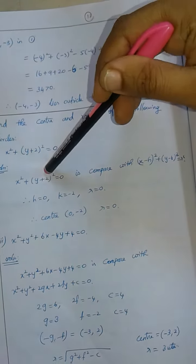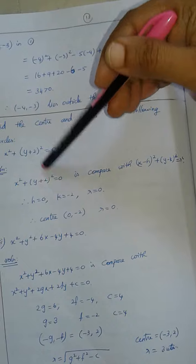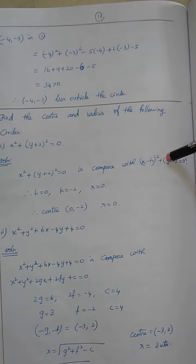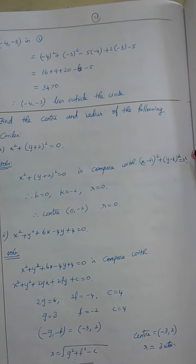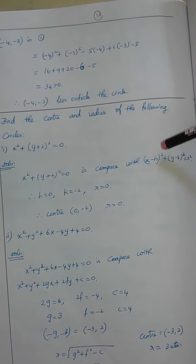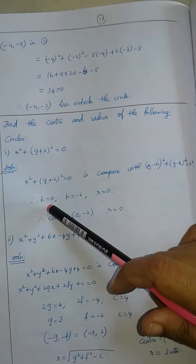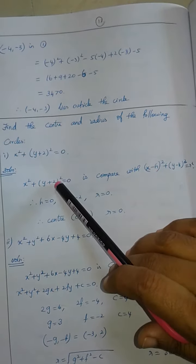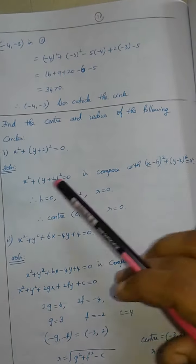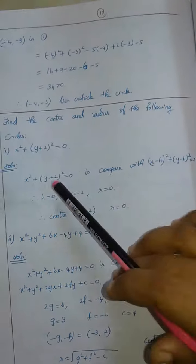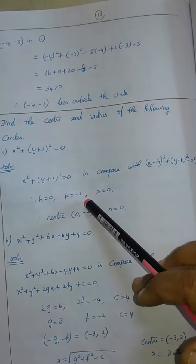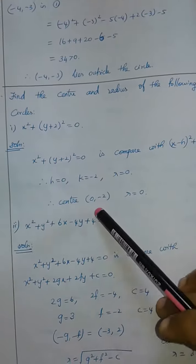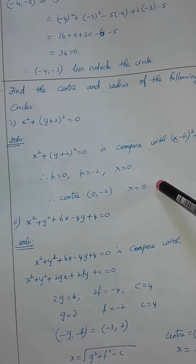If y plus 2 the whole square, this form is used: x minus h the whole square plus y minus k the whole square equal to r square. Now, h is 0 and k is equal to minus 2. You can compare — if k is equal to minus 2, then the center is (h, k), which is (0, minus 2). The radius is 0.